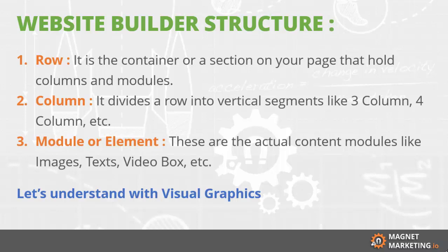Then comes the column. The column actually divides the row into vertical segments like three column, four column, or maybe two column. And the third is module or element — these are the actual contents: images, text, video boxes, testimonials, info boxes, and whatever content you want to add.